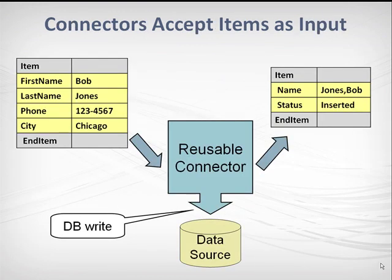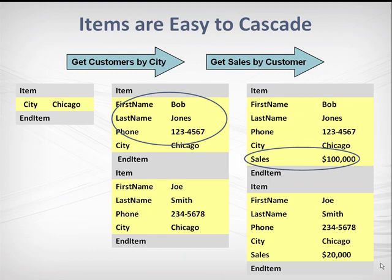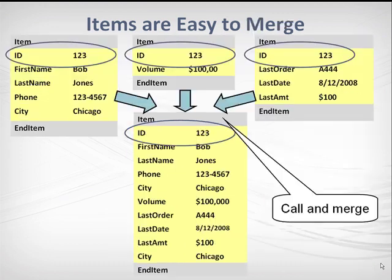The third reason for using lists of items is that they can be useful as input to connectors that can write data. This makes it possible to pipe the output of one connector directly into the input of another. In this example, the first connector looks up all the customers in a given city, and the second adds sales information for each customer. You can also merge items from different information sources that have some attribute in common, similar to the way database joins work. So you can see how connectors and data flattening make it easy to call, extend, and combine data from different information sources.